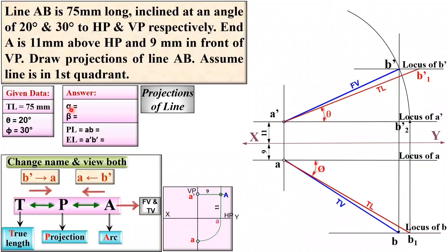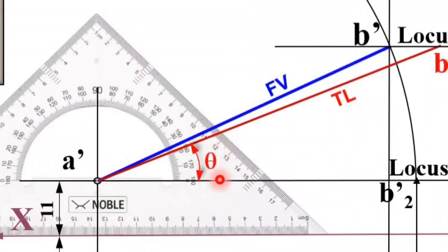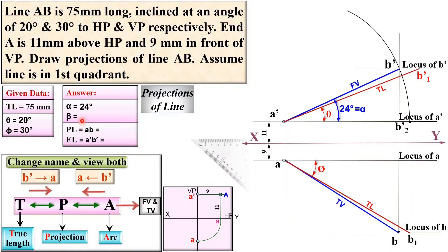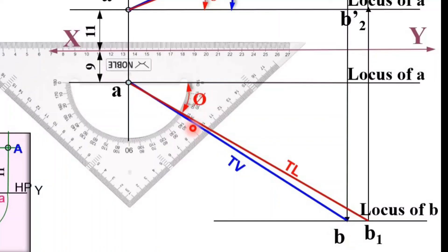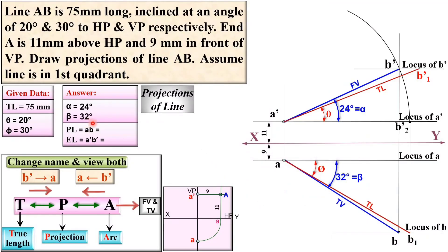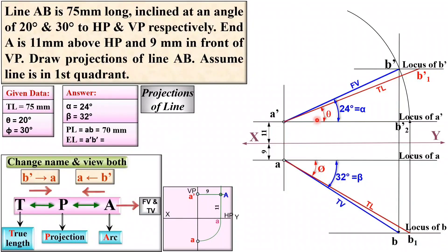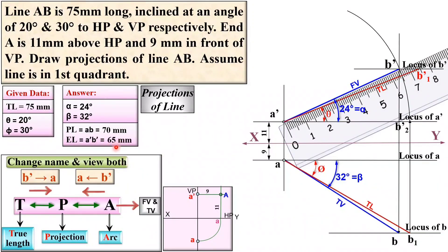Now fill in alpha — the angle of the front view with the horizontal line. Measure it with a set square; here it is 24 degrees, so write alpha = 24 degrees. Next, beta is the angle of the top view with the horizontal line; here it is 32 degrees, so write beta = 32 degrees. Measure the length of AB (plan length): here it is 70 mm. Measure the length of A'B' (elevation length): here it is 65 mm.